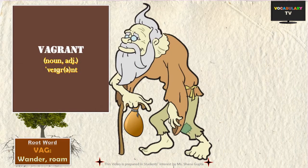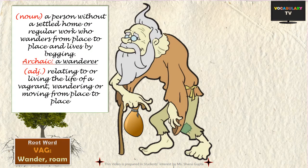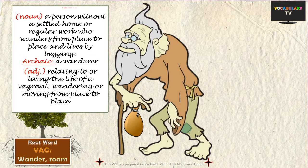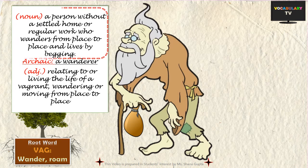The first word we are going to cover is 'vagrant.' The word was originally used to denote a person who used to wander a lot, though nowadays 'vagrant' refers to persons who do not have a settled home or regular work, and who wander from place to place and live by begging. The word can be used both as a noun and as an adjective.